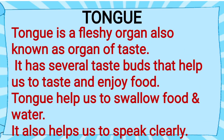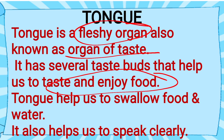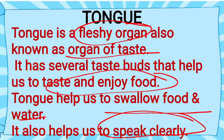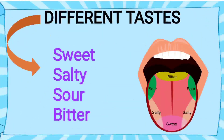Tongue: After teeth, we also need to know about the tongue. The tongue is known as a fleshy organ and is also known as the organ of taste. It has several taste buds that help us to taste and enjoy food. The tongue also helps us to swallow food and water, and most importantly, it helps us to speak clearly. We can detect different types of taste: sweet, salty, sour, and bitter.